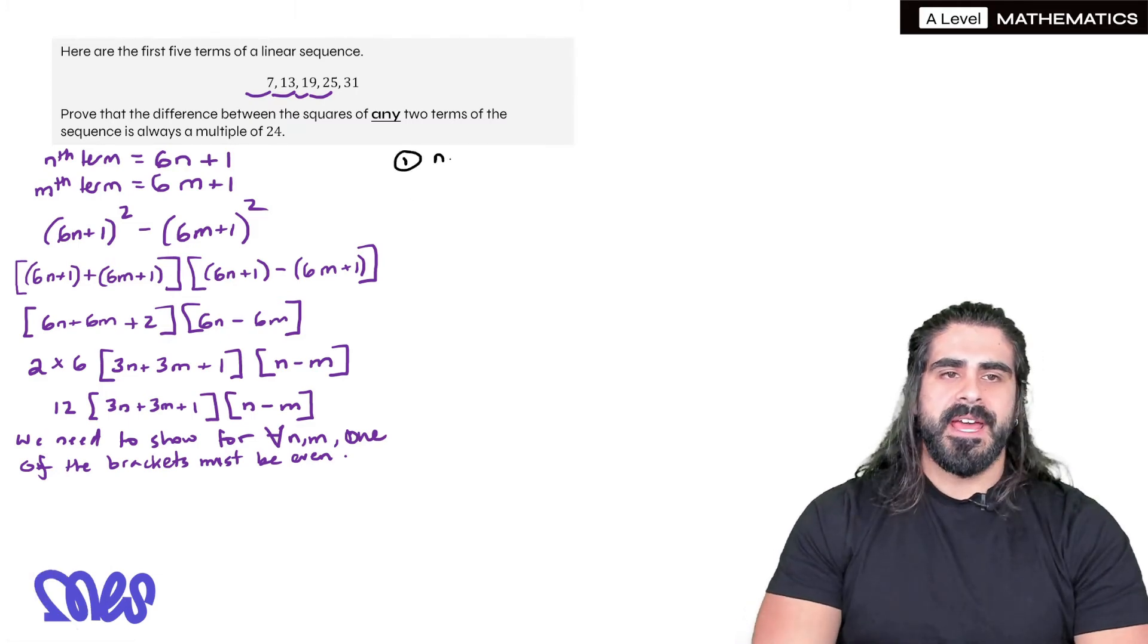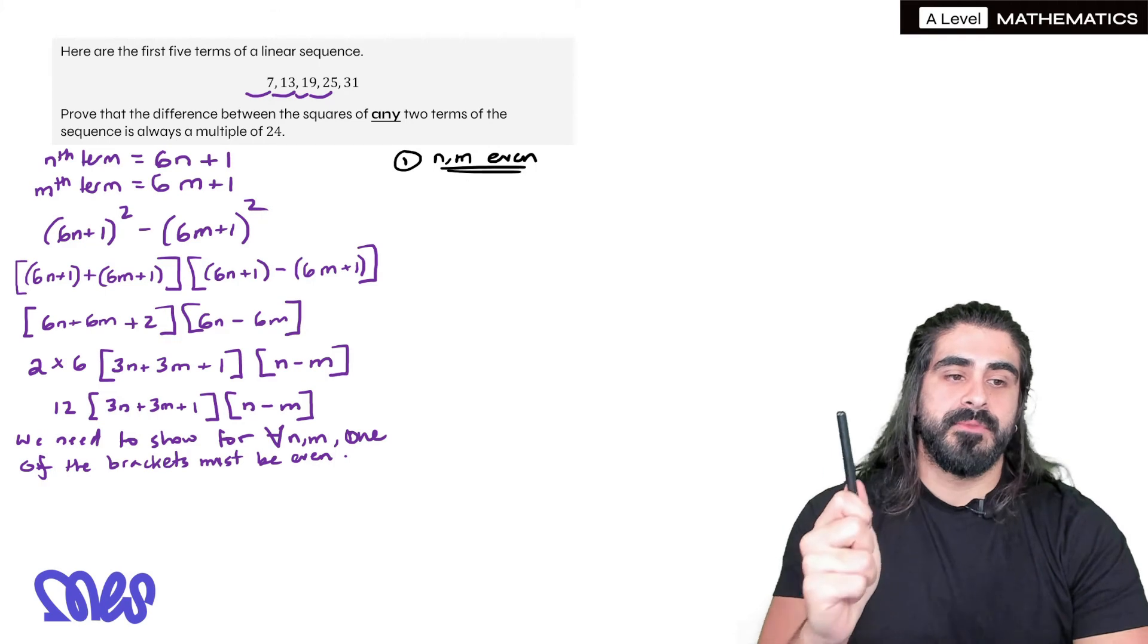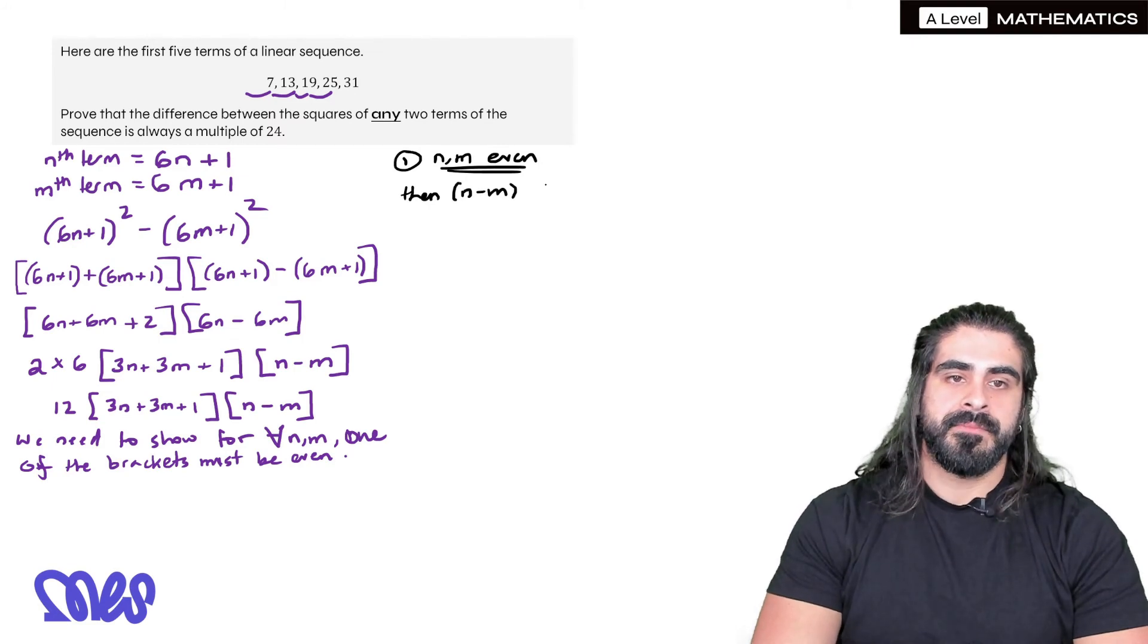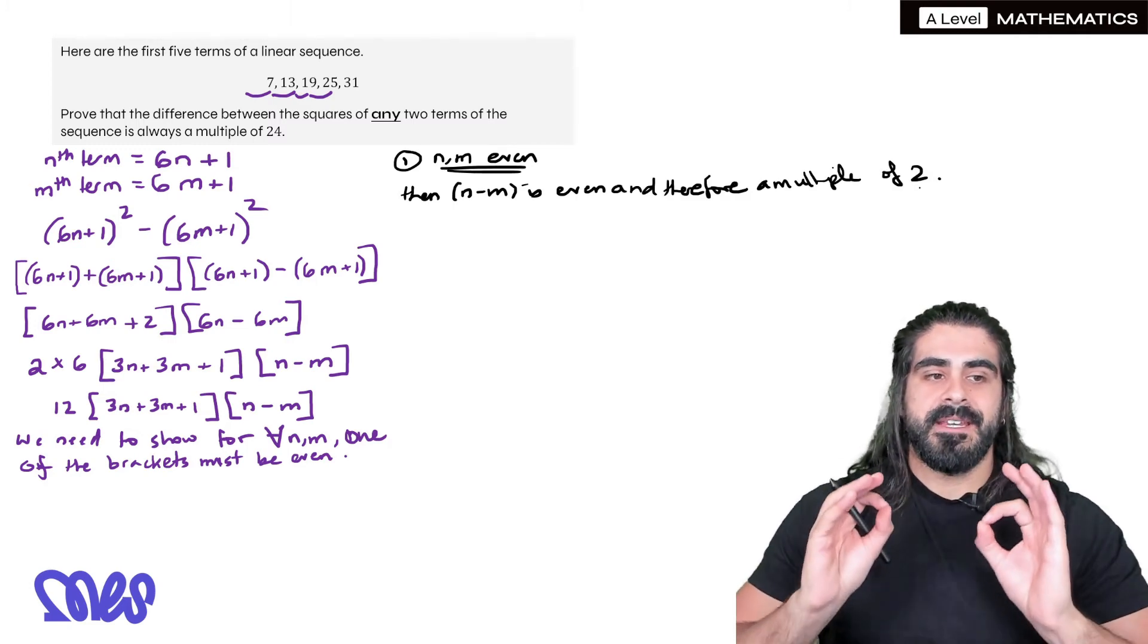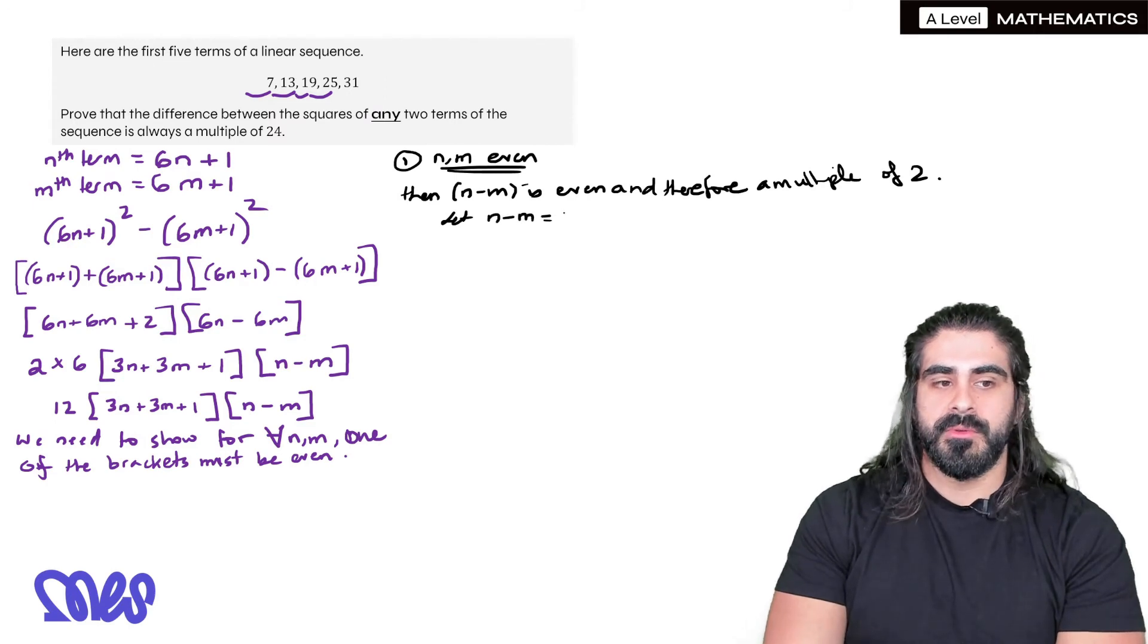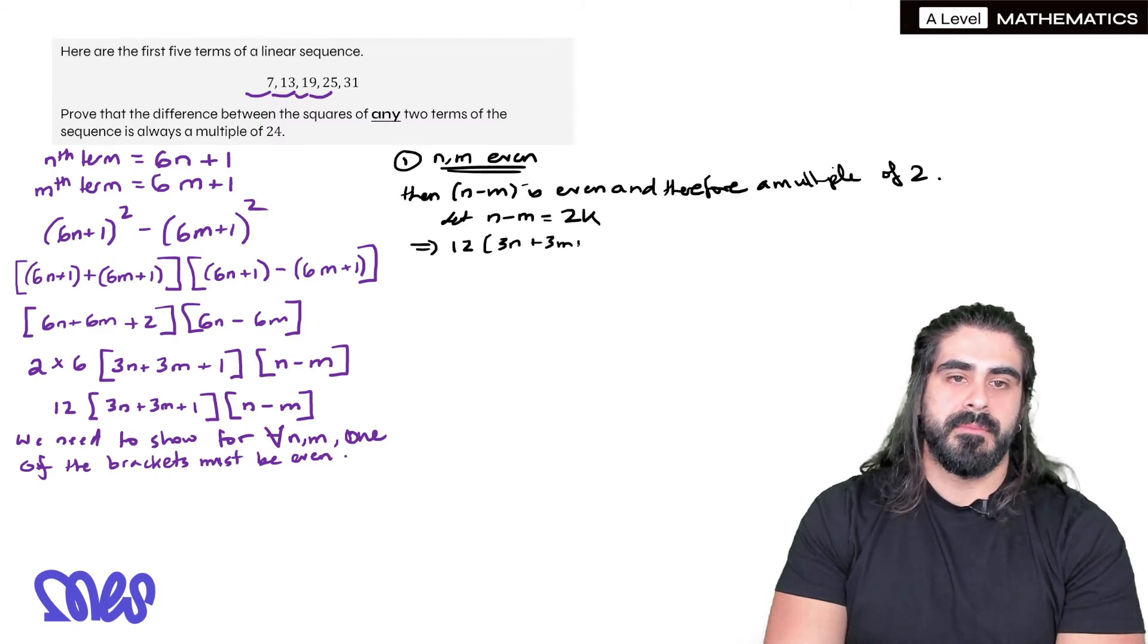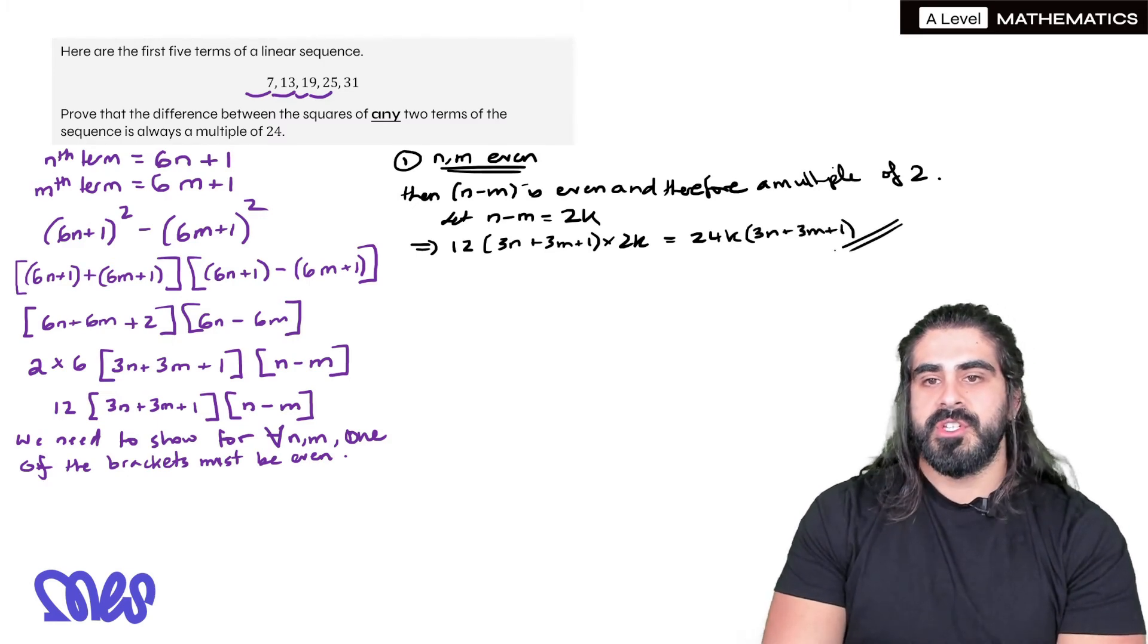So let's do the first one. Let's do n and m are even. Now if n and m are even, then when we subtract n and m, like this one, n minus m, then n minus m is even as well, and therefore multiple of 2. That's good. So we've shown that if n and m are even, then we have one bracket that is a multiple of 2. So we could say, let n minus m equal 2k or something, and our brackets would look like 12, 3n plus 3m plus 1 times 2k, which would be 24k, 3n plus 3m plus 1, which is shown.